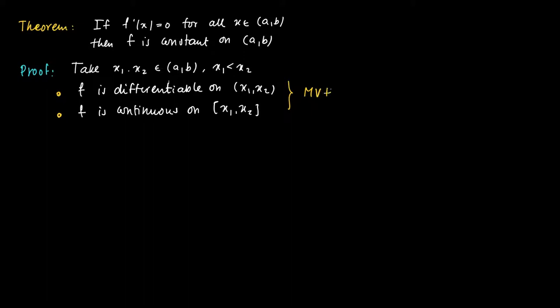Being differentiable, differentiability implies continuity. So now as a result of the mean value theorem, there exists c in (x1, x2).